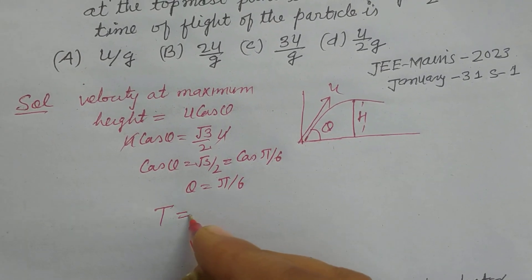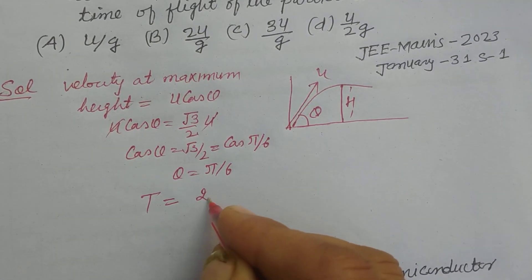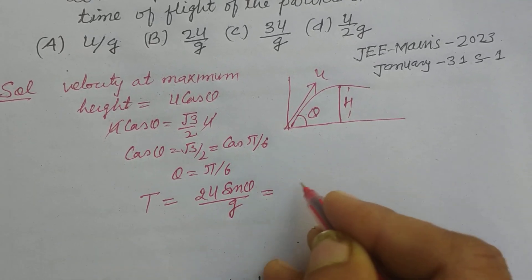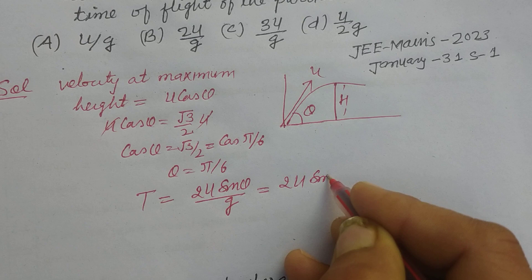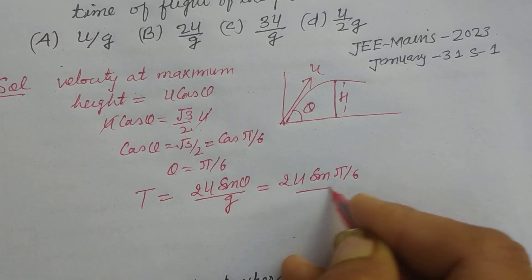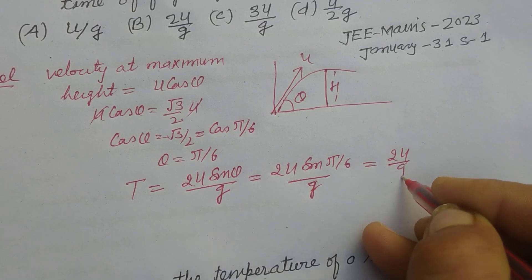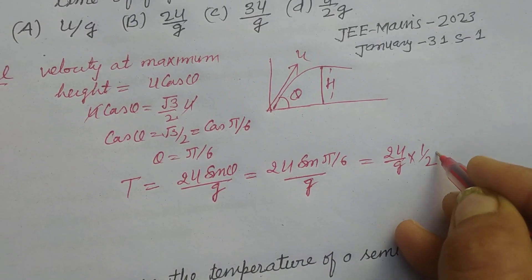Now time of flight, time of flight is 2u sin theta upon g. So 2u sin π/6 over g, and this is 2u/g times sin π/6, which is 1/2.